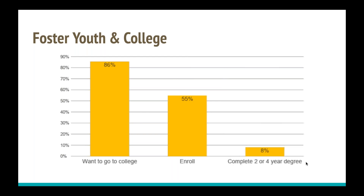Where we're really falling down is degree completion. Studies looking at foster youth degree completion by age 26 found that only 8% had a two or four-year degree. This is consistent with the CalU study here in California, where we're seeing that we're getting them in the door and doing a better job of that, but once they get there, they're still really struggling and not necessarily completing a degree or getting a credential.